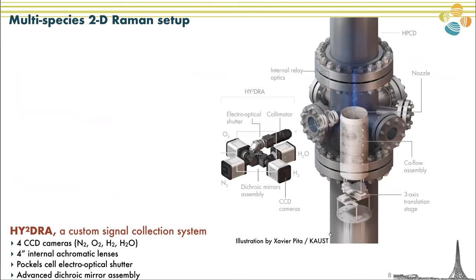This is a detailed schematic of our experimental setup, which includes everything except the laser system. We performed these experiments in the HPCD high-pressure combustion duct. We used jet flames — a very simple burner with a fuel pipe feeding hydrogen surrounded by an air coflow, all mounted on a three-axis translation stage. One challenge with Raman scattering is the weakness of the signal intensity, so we improved the signal collection efficiency with internal relay optics: two 4-inch achromatic lenses inside the HPCD relay the flame signal outside. The signal then enters the Hydra, our custom KAUST imaging system, composed of a collimator, an electro-optical shutter, a dichroic mirror assembly, and four low-noise CCD cameras, one for each species.